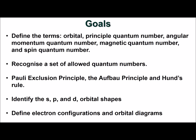Work through the quantum number examples that have full solutions provided. You should now have a working knowledge of the atom and be able to define the terms orbital, principal quantum number, angular momentum quantum number, magnetic quantum number, and spin quantum number. You should be able to recognize a set of allowed quantum numbers and understand the Pauli Exclusion Principle, the Aufbau Principle, and Hund's rule. You should be able to identify the shapes of the S, P, and D orbitals and define an electron configuration and orbital diagram.